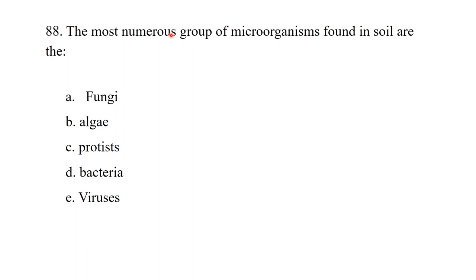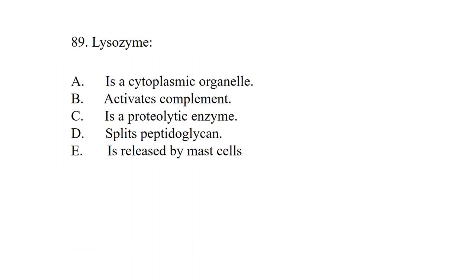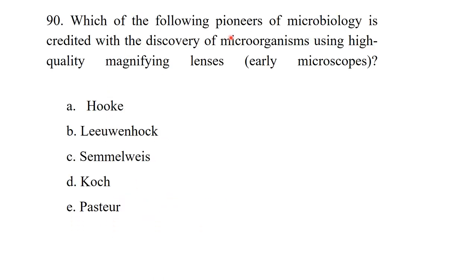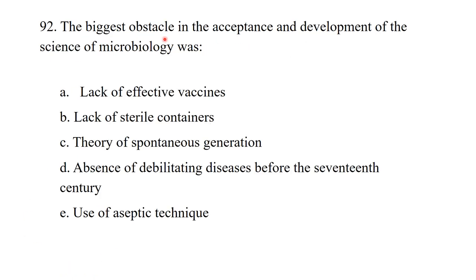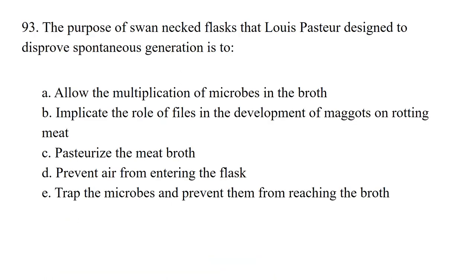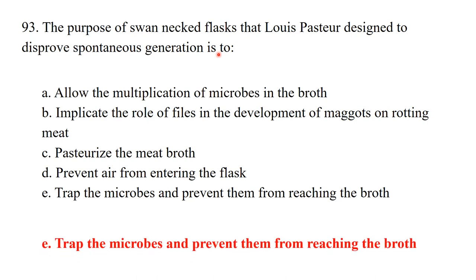The most numerous group of microorganisms found in soil are bacteria. Lysozymes are enzymes that help in the breakdown of peptidoglycan. Who is credited with the discovery of microorganisms using high-quality magnification lenses? It was Antonie van Leeuwenhoek, the father of microbiology. Who first disproved spontaneous generation by showing maggots only appear on meat exposed to flies? It was Redi. The biggest obstacle to the acceptance of microbiology was the theory of spontaneous generation. The purpose of Pasteur's swan-neck flask was to trap microbes and prevent them from reaching the broth.